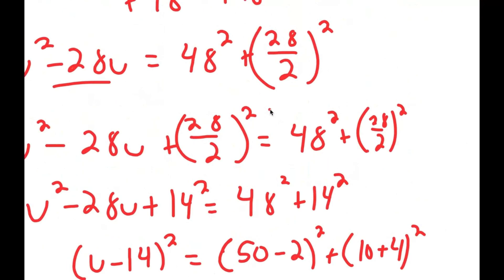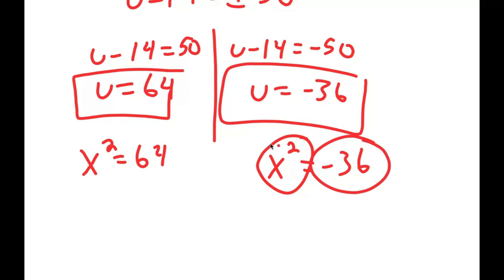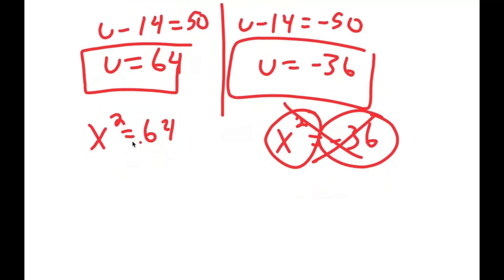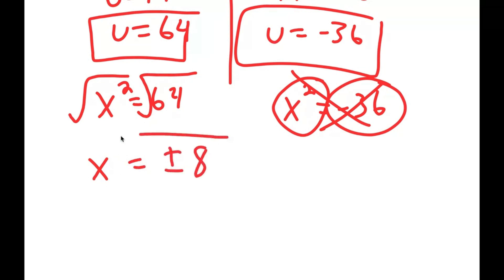Now remember we let u equal x squared. So x squared equals 64 and x squared equals negative 36. We can't have a number squared equal to a negative number in the reals, so x squared equals negative 36 is excluded for real solutions. That means x squared equals 64 is the only valid real equation, and taking the square root gives x equals positive or negative 8.